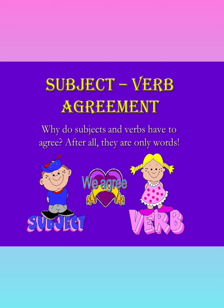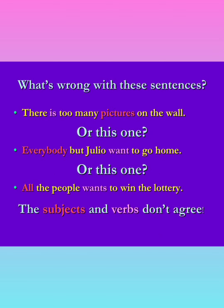Do you have any answer, students? After all, they are only words. Then why do subjects and verbs have to agree? We will come to know the answer by looking at these examples. Can you find out anything wrong with these sentences? There is too many pictures on the wall. Is there anything wrong? Everybody but Julio wants to go home. All the people wants to win the lottery. What's wrong with the sentences? Here the subjects and verbs don't agree.